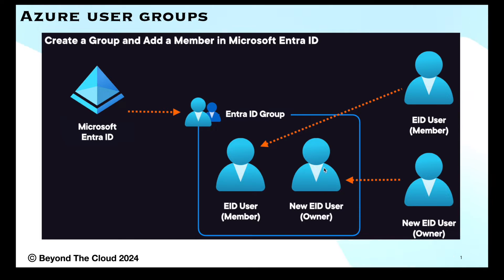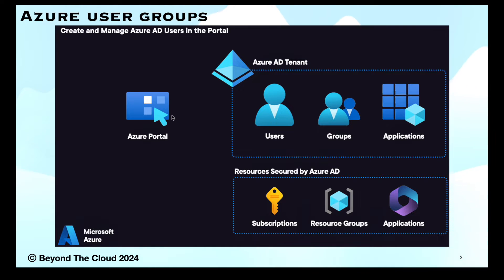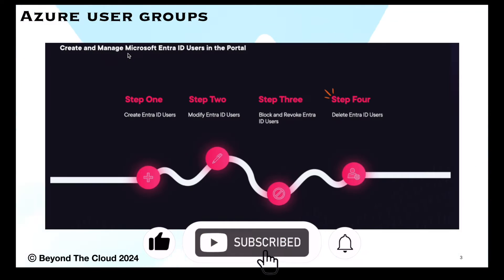We will also make the newly added user an owner of the Entra ID group. Microsoft Entra ID was previously known as Active Directory and can hold multiple things. In the Azure portal you can see that Entra ID can consist of users, groups, and applications. Resources such as subscriptions and resource groups can also be tagged to Entra ID, but the main focus of this lab is users and groups.